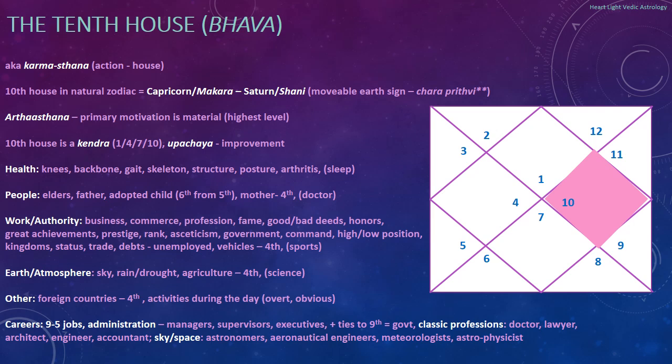Other miscellaneous items: foreign countries — which could be seen as the reflection of the 4th house, meaning if the 4th represents home, then the 10th is the farthest point away from home. I'm just sharing what's on my list so you can look at different charts and see what works for you and what seems consistent. The 10th house relates to activities during the day — things that are overt and obvious — as opposed to the 4th house, which is more midnight and private home life. The 10th house is more of a public activity type of house.